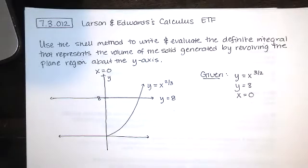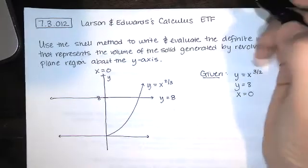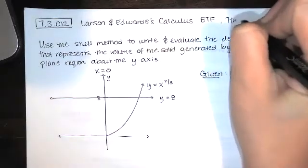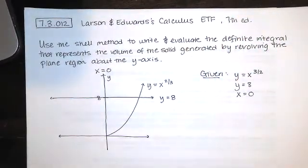In this video we solve homework problem 7.3.012 from the Larson and Edwards calculus early transcendental functions textbook, seventh edition. The problem statement says use the shell method to write and evaluate the definite integral that represents the volume of the solid generated by revolving the plane region about the y-axis.